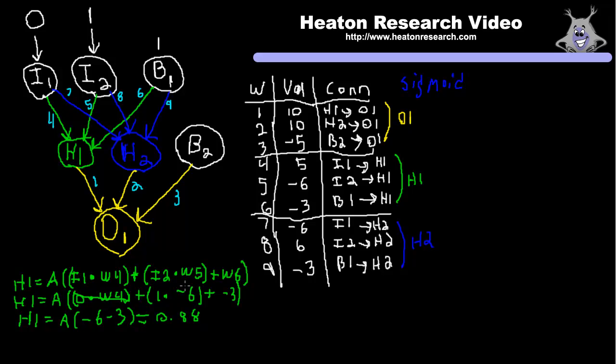Now let's look at the other values. We can also see the value calculated for H2, and then when we run the whole thing through the same equation again, output one is 0.98, which is close to one — which is consistent with the exclusive or result.